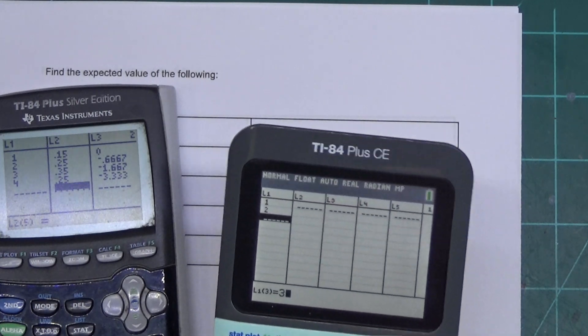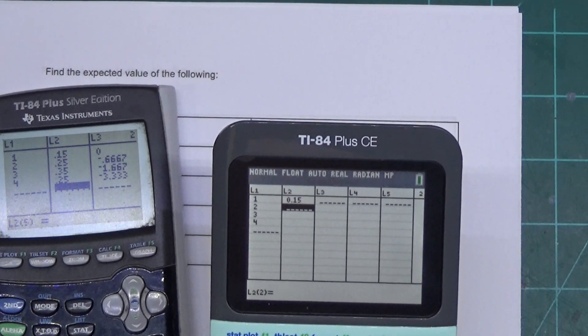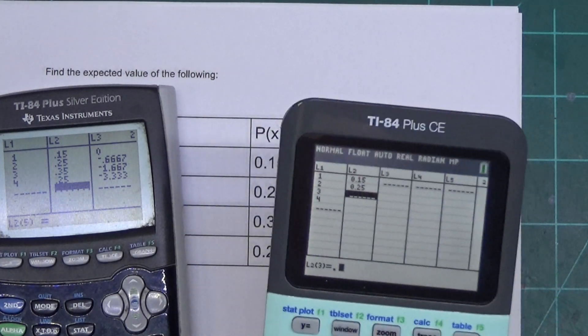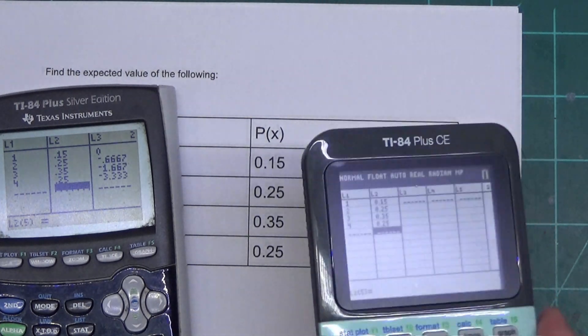One, two, three, four. Over here, 0.15, 0.25, not negative, 0.35, and 0.25.